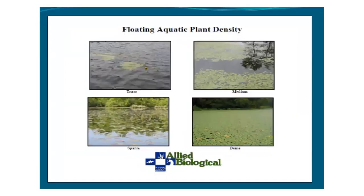For floating aquatic plants, abundance is measured similarly. A trace amount means just a few plants floating on the surface, and by the time you get up to dense, most of the water surface is covered with the plant.